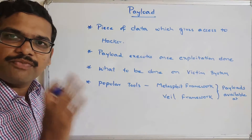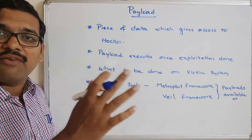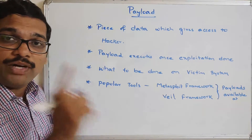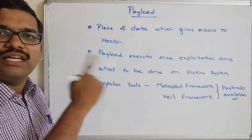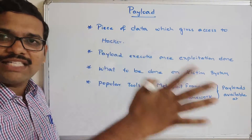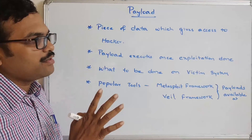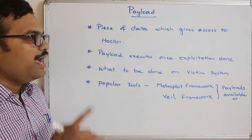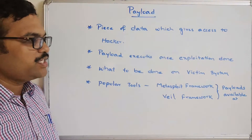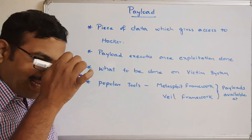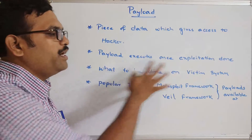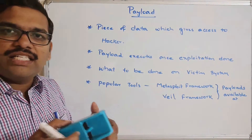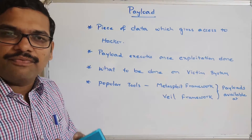You can use Metasploit Framework or the Veil Framework to use the payloads — both have exploits as well as payloads. In order to gain access to a system, the first step is to find the vulnerabilities, take advantage of those vulnerabilities by executing the exploit, and once that is done, set the payload. The payload gives the hacker access to the data. It is executed only after exploitation and tells what is to be done on the victim system.